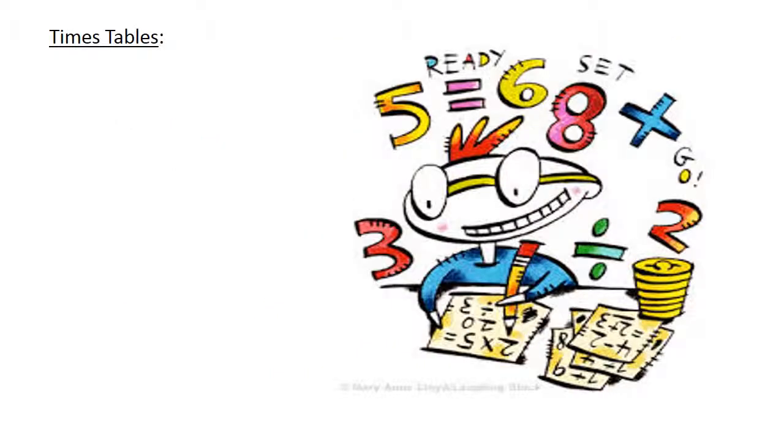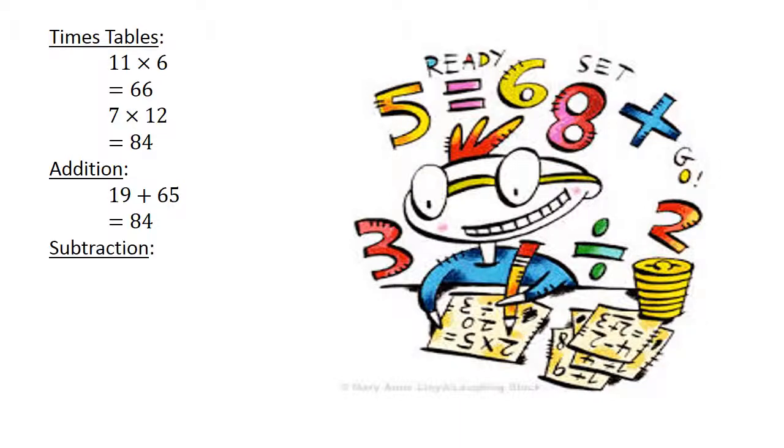Times Tables: 11 times 6 equals 66. 7 times 12 equals 84. Addition: 19 plus 65 equals 84. Subtraction: 22 minus 77 equals negative 55.